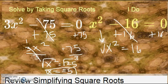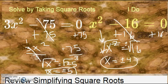To get rid of a square, we take the square root. When we take the square root of a number, we put plus or minus in front. The square root of x squared is x. The square root of 16 is 4. So x equals plus or minus 4.